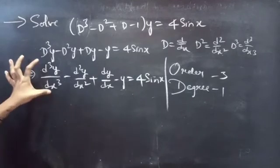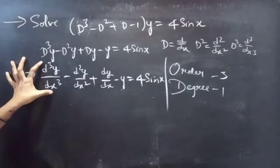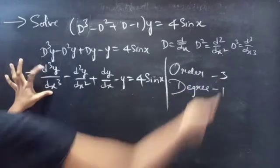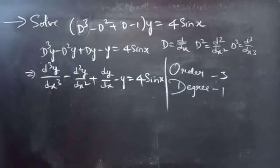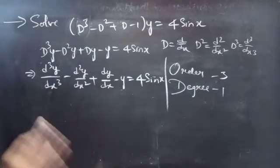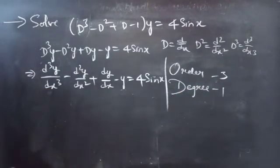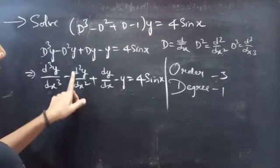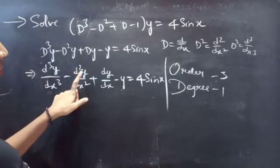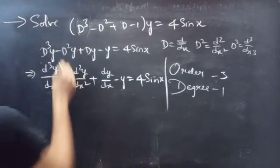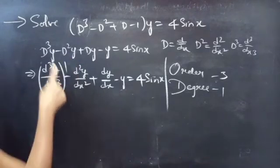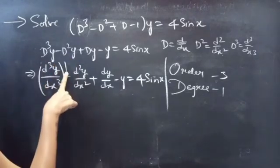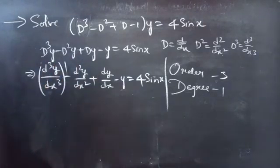Identify the highest derivative here: d³y/dx³ is the highest derivative, so our order will be 3. Since our order is 3, we will get exactly 3 constants in the final answer. The highest power of the highest derivative gives degree = 1.